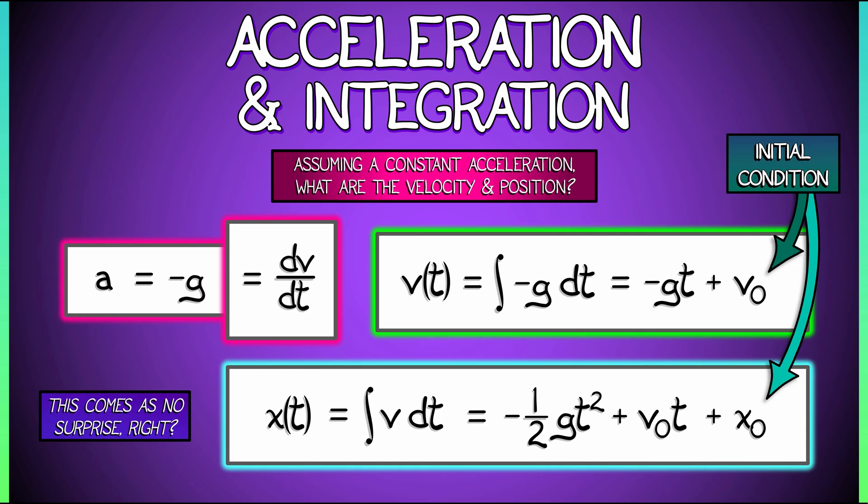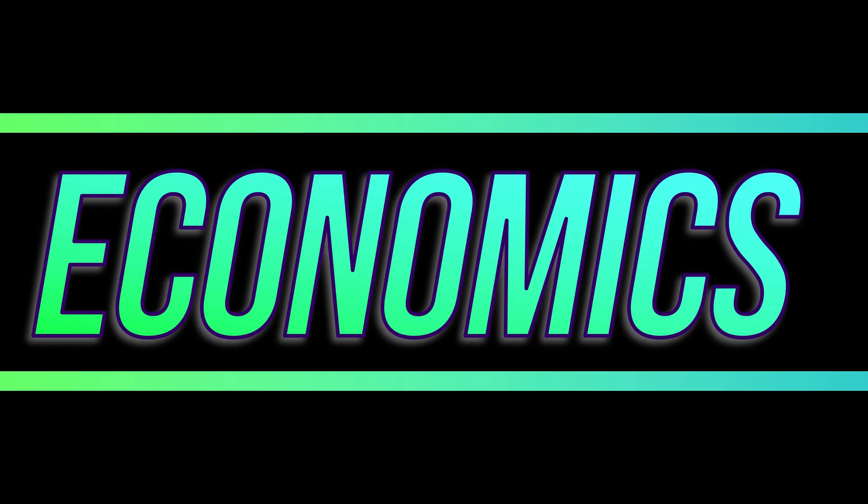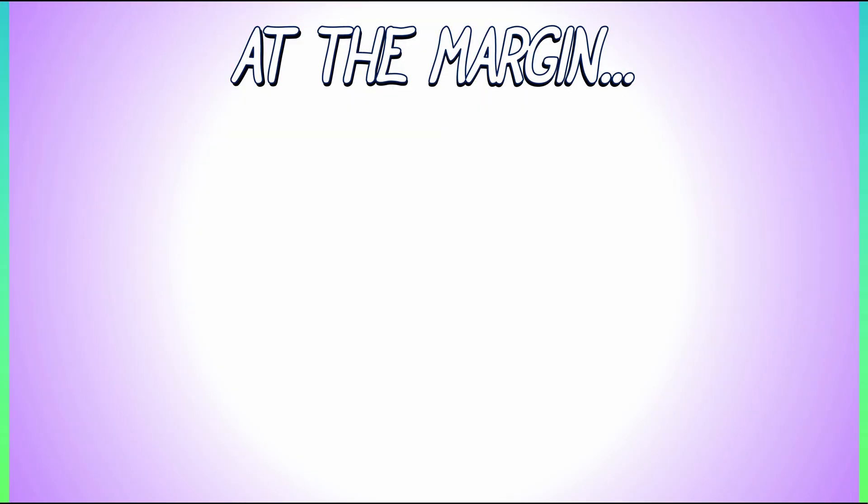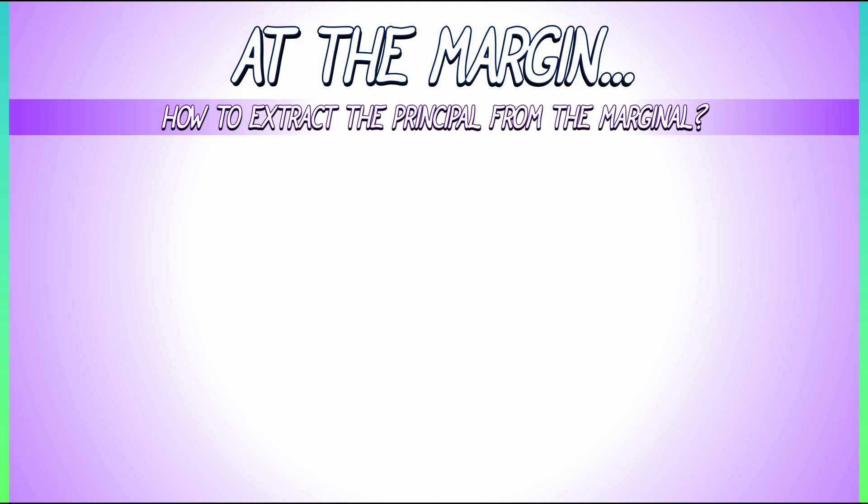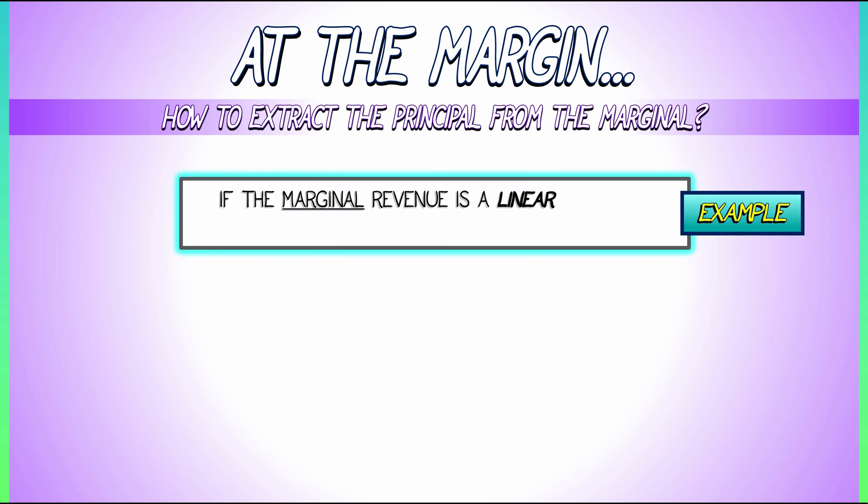Okay, so much for mechanics. Next, let's turn to another example, to economics, where one is often working with marginal data, with information about a function at the margin. How do you go from the marginal to the principle? You anti-differentiate. So, for example, if we're in a situation where we know something about the marginal revenue. Let's say marginal revenue is a linear function of time. What does the total revenue look like?